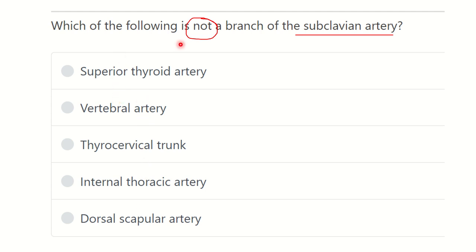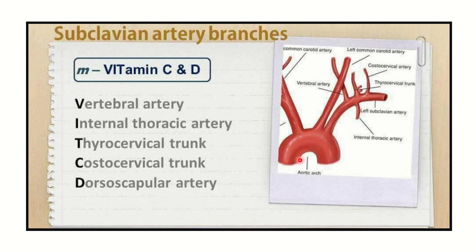Looking at this picture, we can see the aortic arch. From the arch of the aorta, three arteries arise: first the brachiocephalic trunk, then the left common carotid artery, and then the left subclavian artery. We can also see some branches of the subclavian artery in this image.